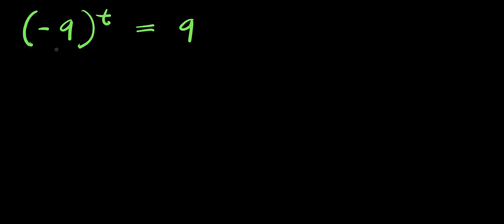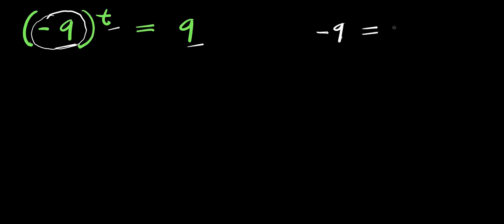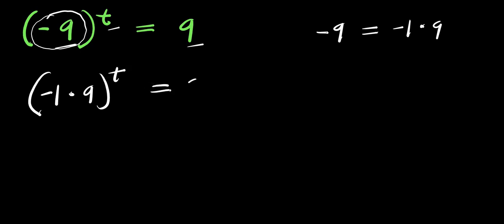Hello! How do you solve this problem? You have negative 9 to the power of t equals 9. You are solving for the value of t that satisfies this equation, and in this video we are going to make use of two different methods. For the first method, I'm going to replace negative 9 with negative 1 times 9, so we have negative 1 times 9 raised to the power of t, and this equals 9.